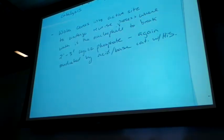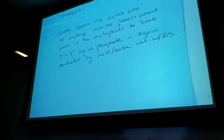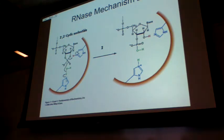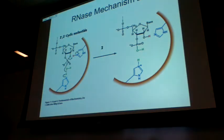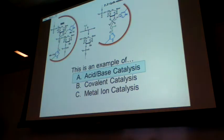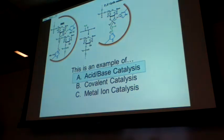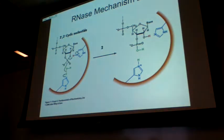To clarify, the reverse process means that the protons are going back to the histidines. Initially that one acted as the base and this one acted as the acid. Now this one is acting as the base and this one is acting as the acid, and the identity of our nucleophile has changed. Initially it was this 2 prime hydroxyl that was the nucleophile, and now water's the nucleophile. So this one came in and made this phosphoester bond initially, and now water's going to come in to break the phosphoester bond.